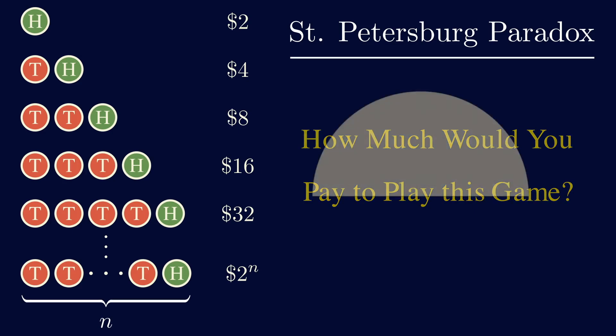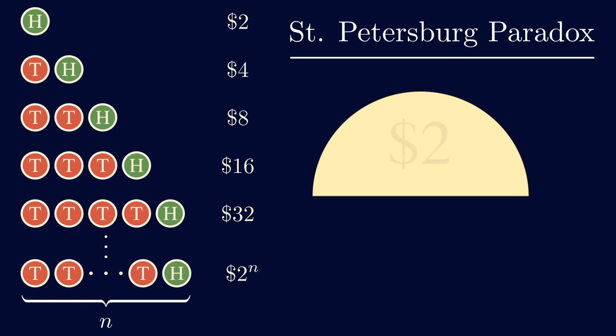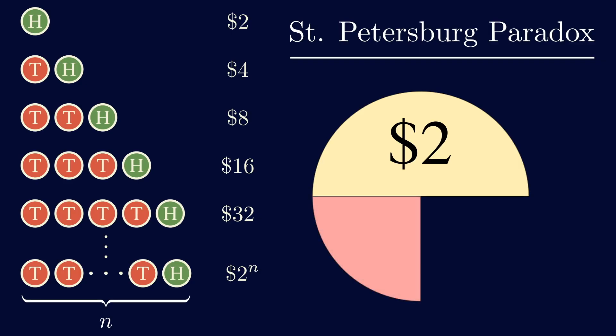This is because you've got a 50% chance of getting heads on the first flip and only winning 2 bucks. And with a quarter chance, it takes you 2 flips to get the heads, and you'll only make 4 dollars.